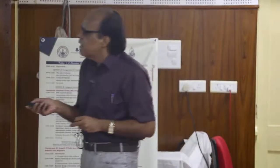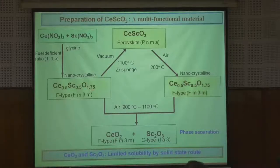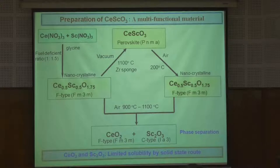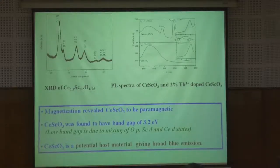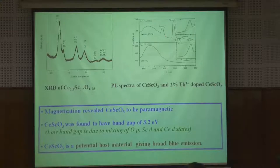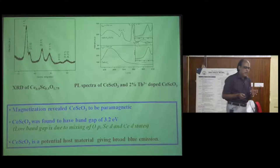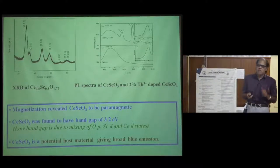Do a combustion reaction and get this compound, which is a sort of precursor. If you knock out 0.25 oxygen from here, you get the perovskite from the fluorite. That 0.25 oxygen can be knocked out by heating in the presence of zirconium sponge. The compound was well characterized by a number of techniques. It shows photoluminescence — a broad blue emission — and if you dope with terbium at the scandium site, it also shows green emission. The band gap is 3.2 eV. So, truly a multifunctional material showing four to five different types of properties.